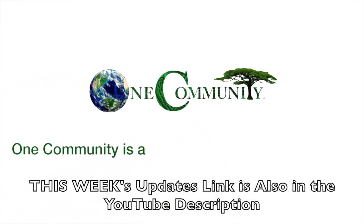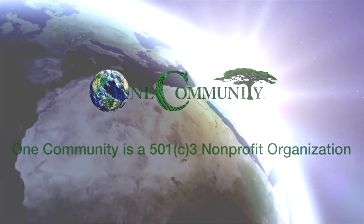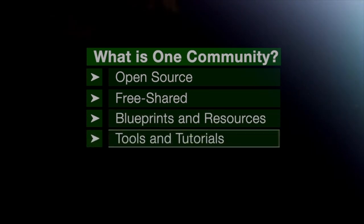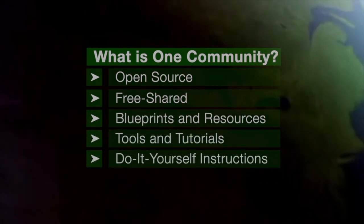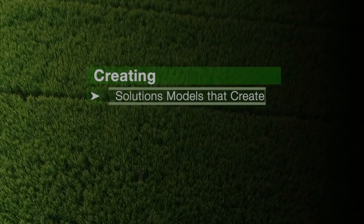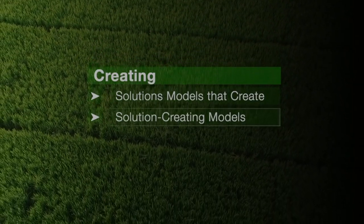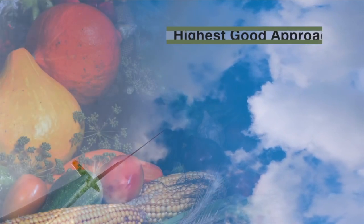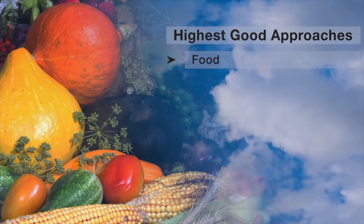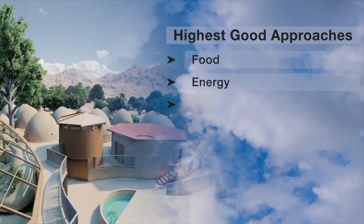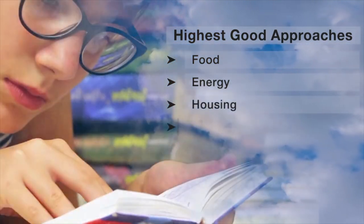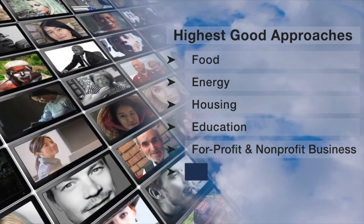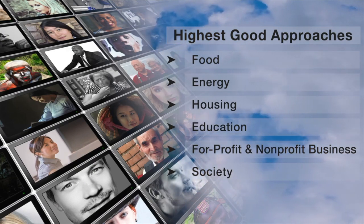One Community is a 501c3 nonprofit organization. We are creating open source and free shared blueprints and resources, tools and tutorials, and do-it-yourself instructions for highest good living. Creating solution models that create additional solution-creating models in the service of all life on this planet. This includes highest good approaches to food, energy, housing, education, for-profit and non-profit business creation, society, and true earth stewardship.